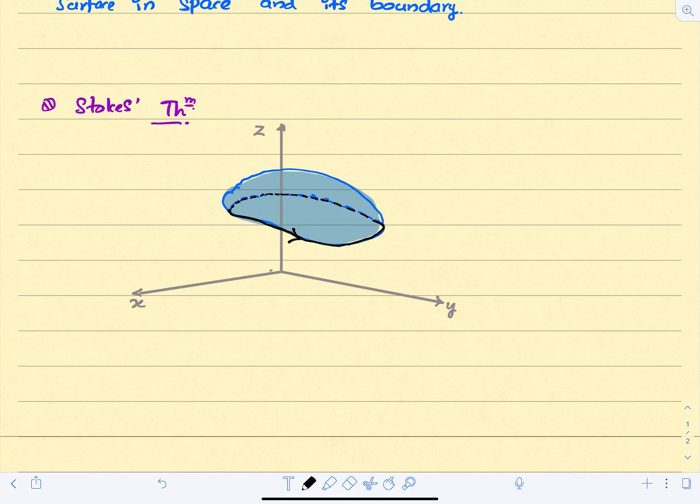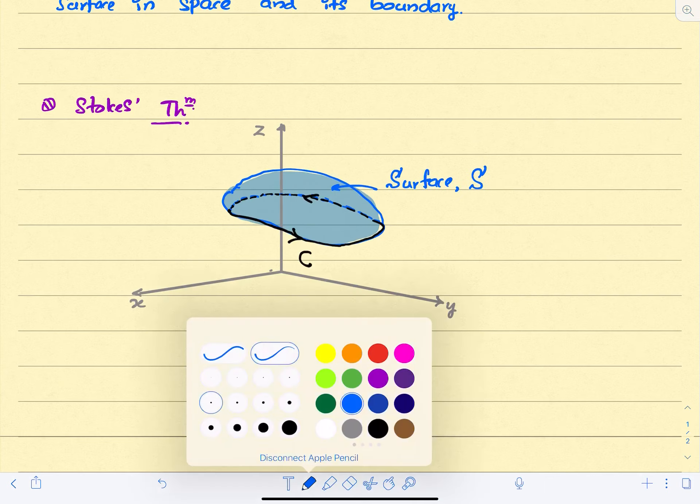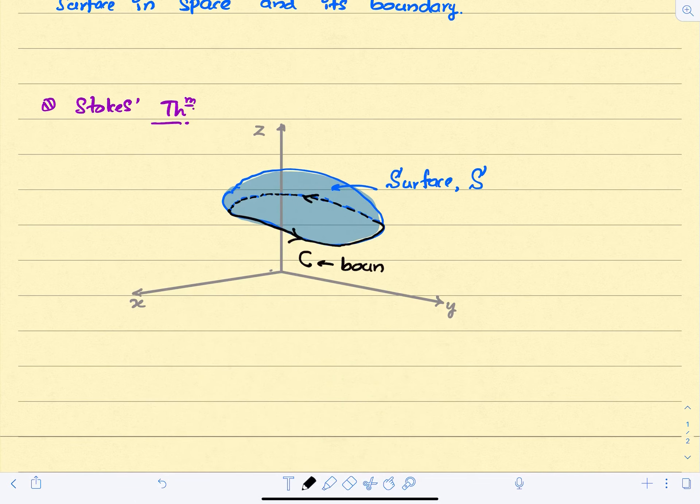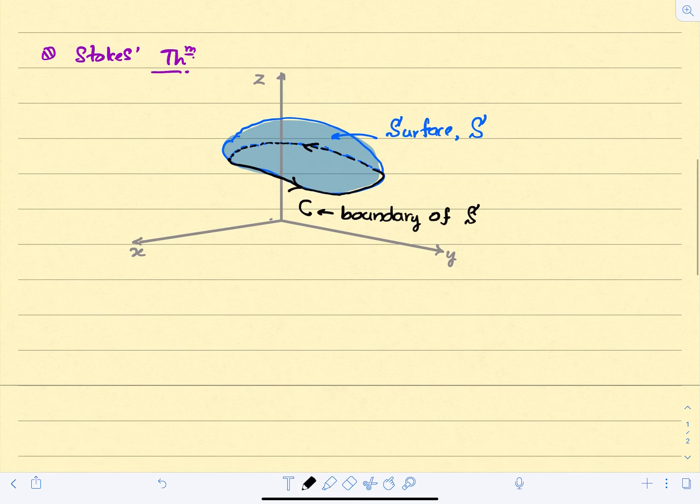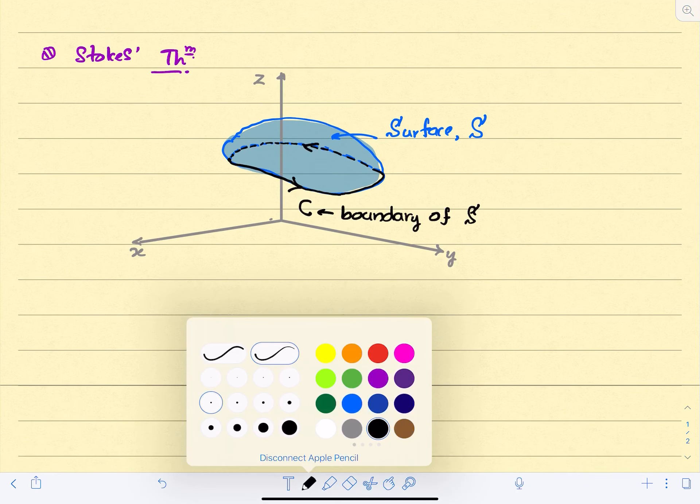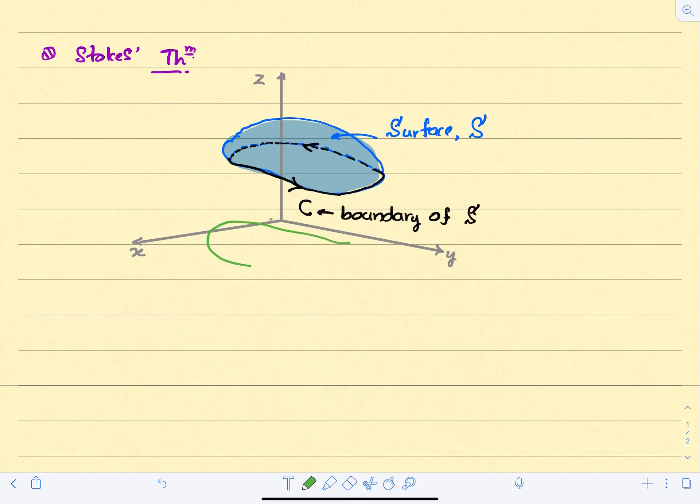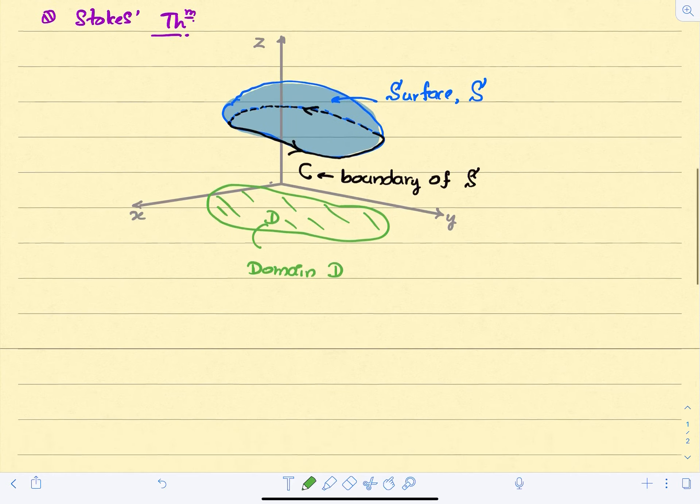Now on this, the boundary of the surface can be written using C, that's a curve. The surface is S, and C is the boundary. Now if you project this surface onto the x-y plane, you will see a domain D. So domain D on the x-y plane.